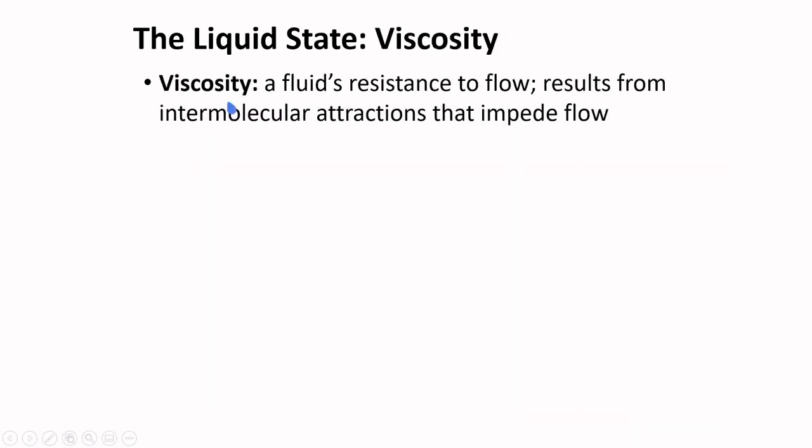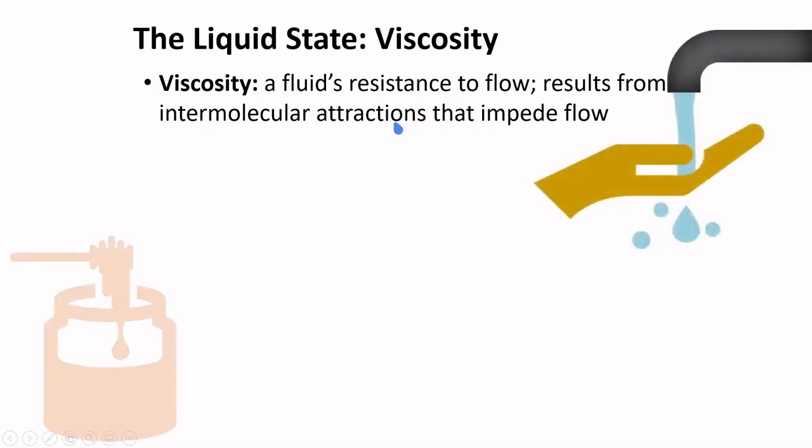The next property of the liquid state is viscosity. Viscosity is the fluid's resistance to flow. This results from intermolecular attractions that impede flow.